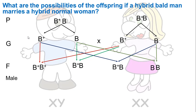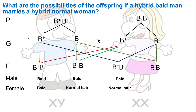The first offspring (B+B+): if male, bold; if female, also bold. The second offspring (B+B): if male, bold; if female, normal hair — because this gene is recessive in the absence of male sex hormones. The third offspring (B+B) is the same as the second. The last offspring (BB) has normal hair for both sexes.